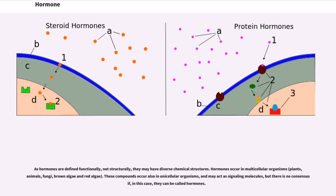Hormones occur in multicellular organisms: plants, animals, fungi, brown algae and red algae. These compounds occur also in unicellular organisms, and may act as signaling molecules, but there is no consensus if, in this case, they can be called hormones.